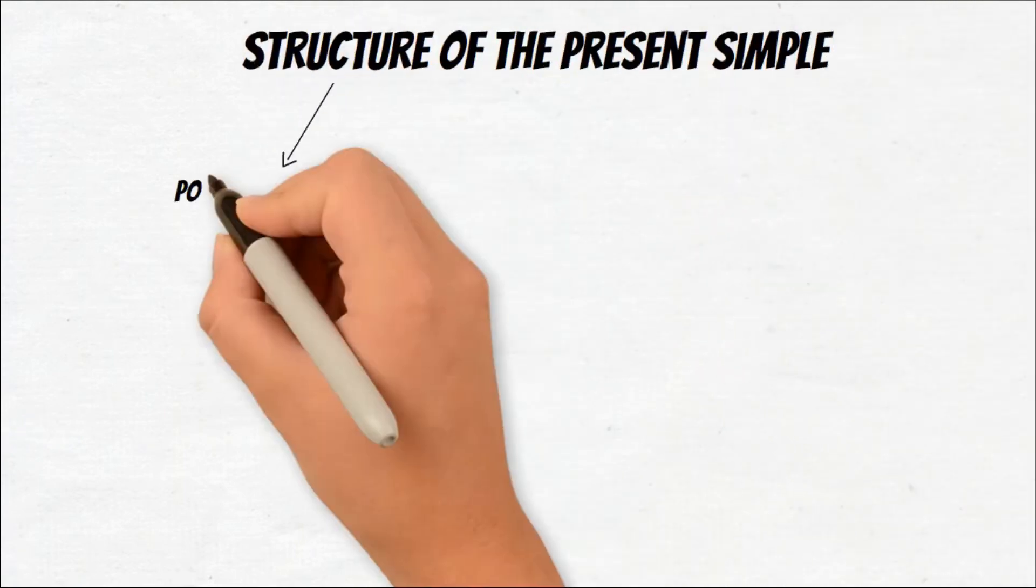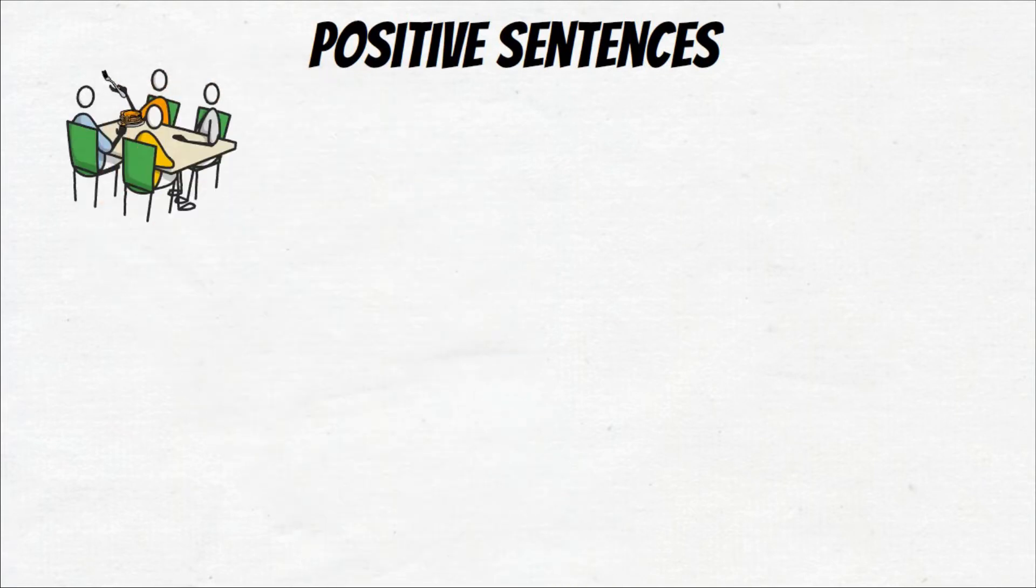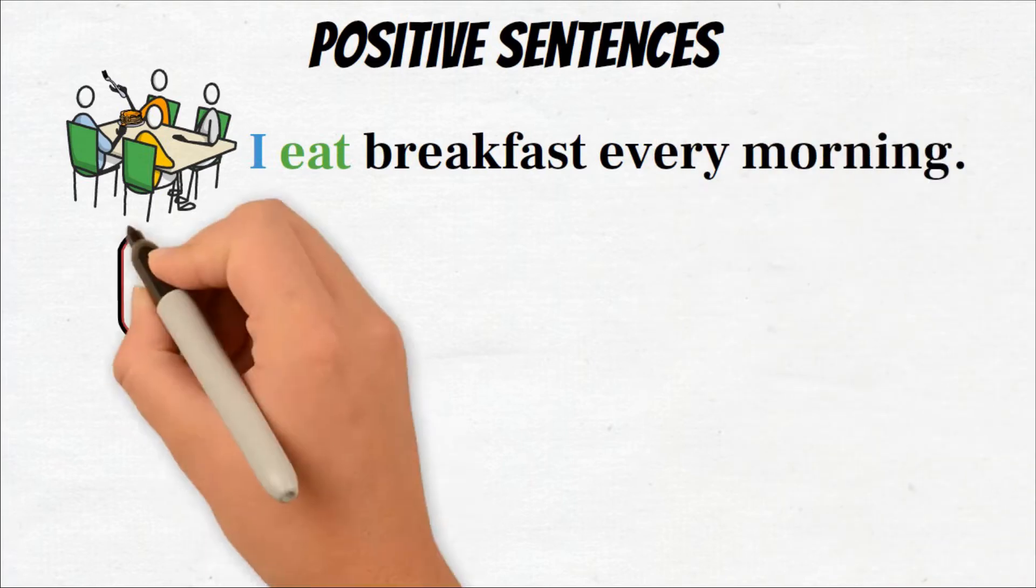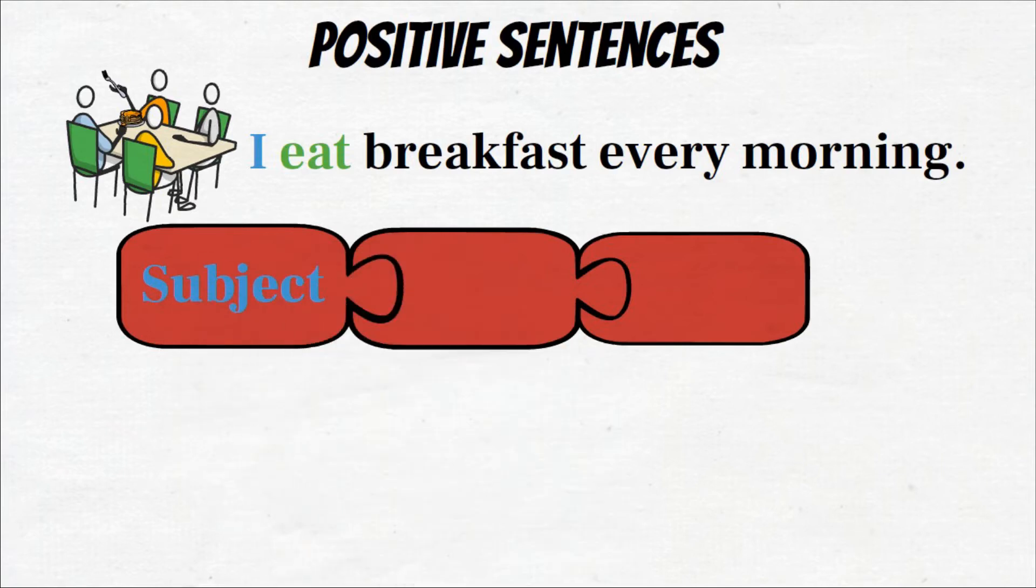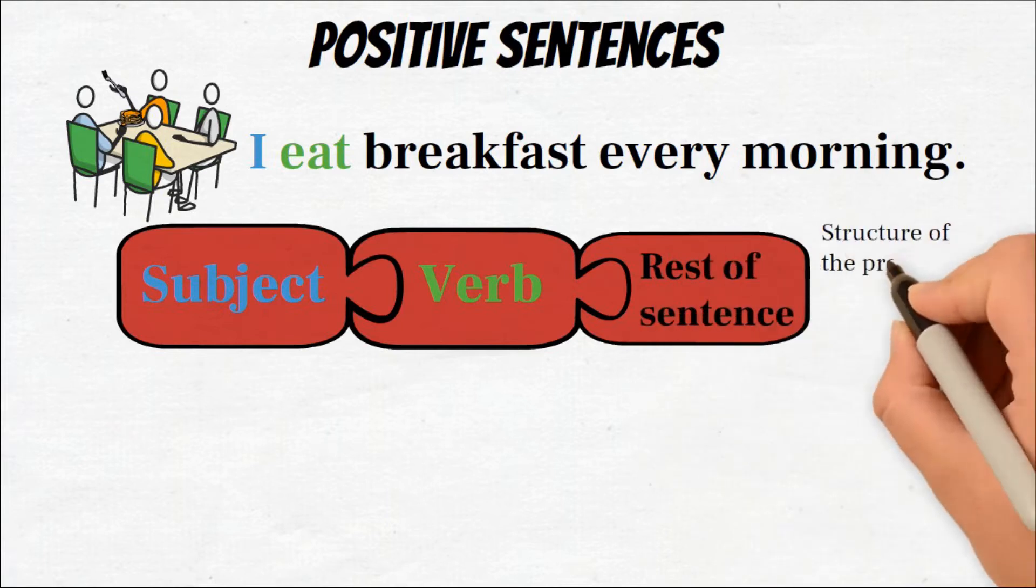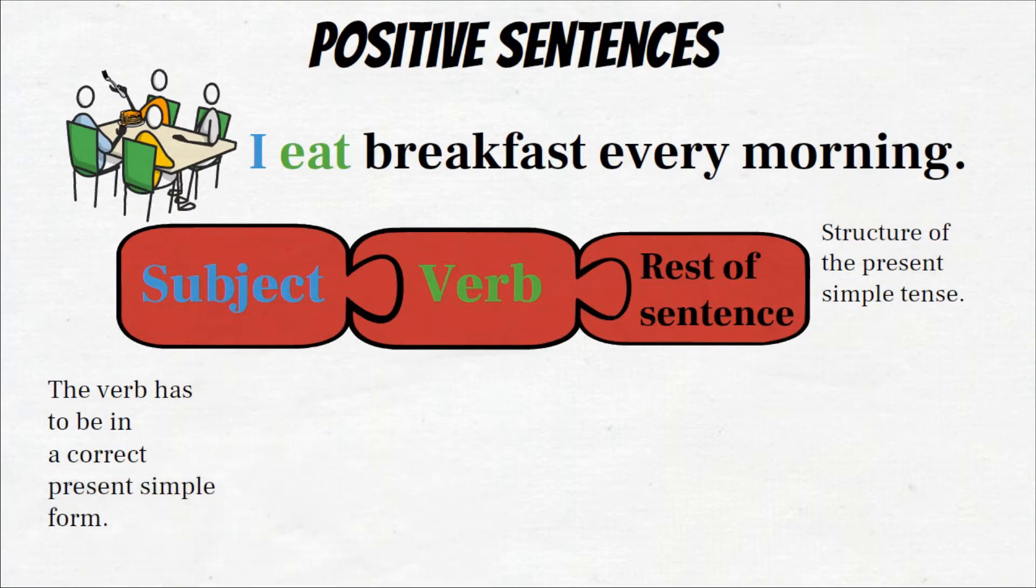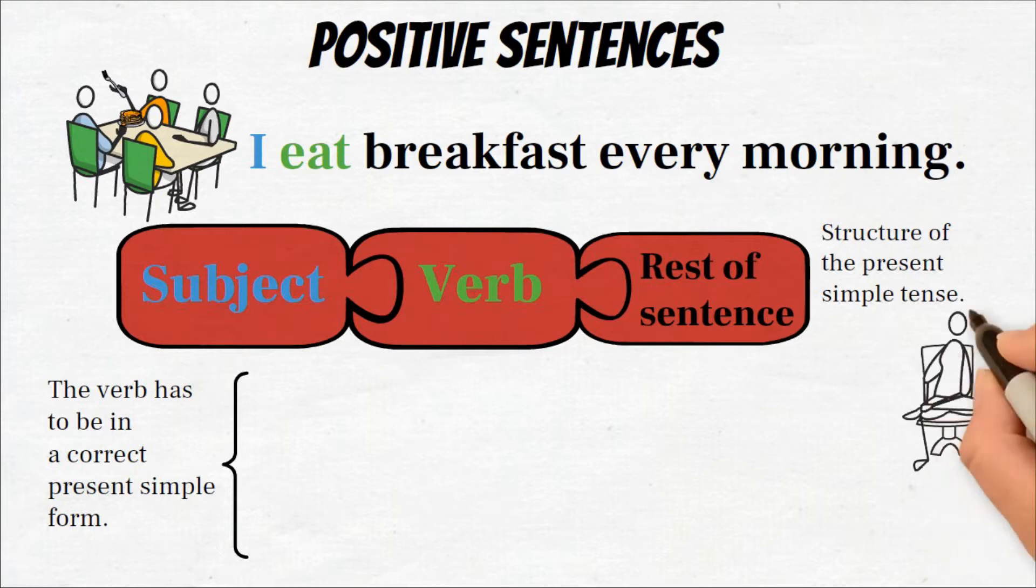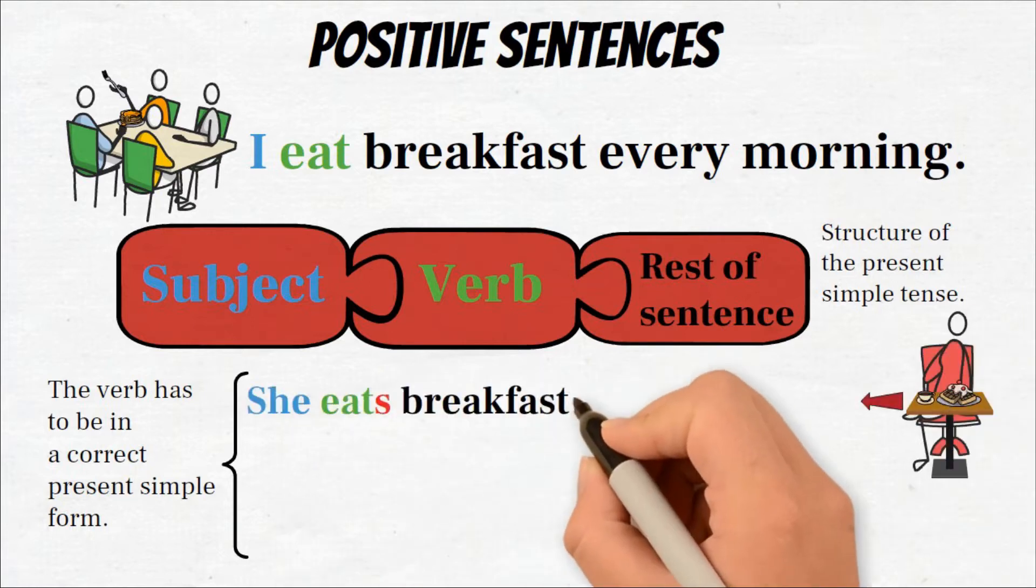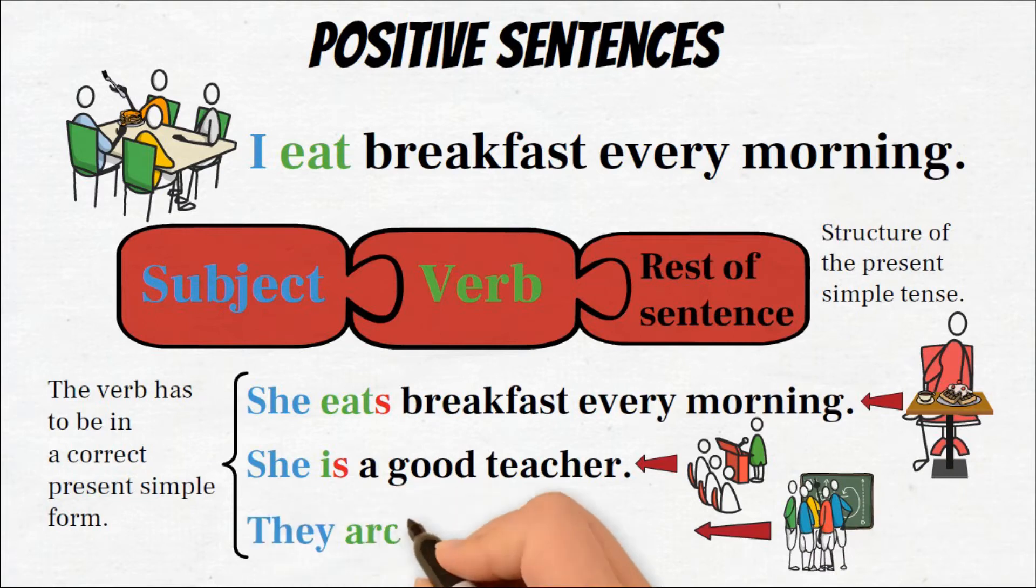Okay, now let's learn the structure of the present simple tense. We will first focus on positive sentences. Let's look at this example: I eat breakfast every morning. We have a subject, a verb, and the rest of the sentence. That's the structure of the present simple tense. Note that the verb has to be in a correct present simple form, as we discussed earlier. For example, she eats breakfast every morning, or she is a good teacher, and they are good teachers.